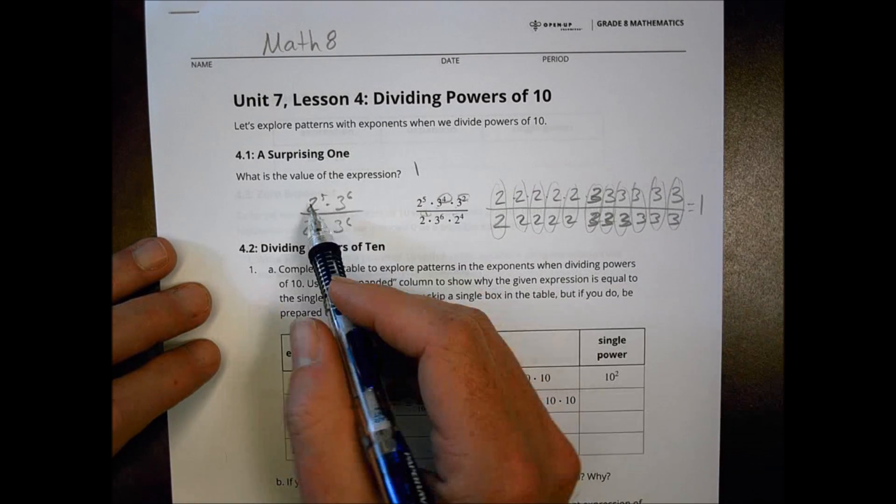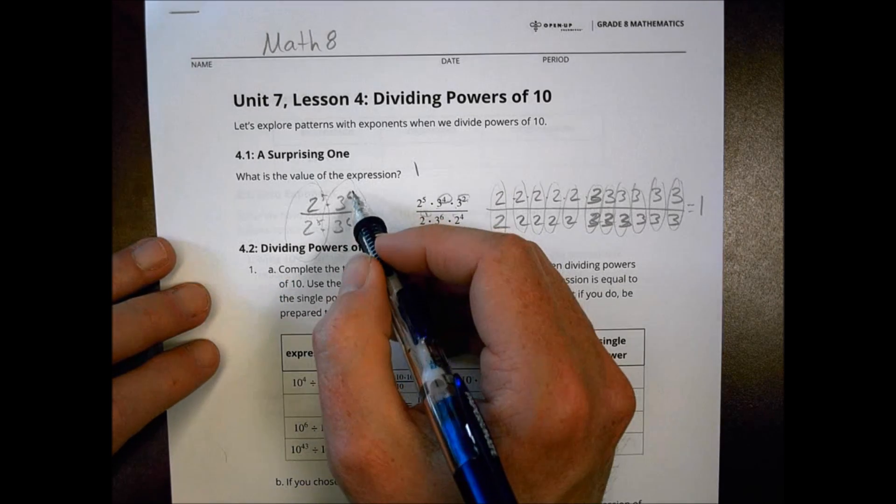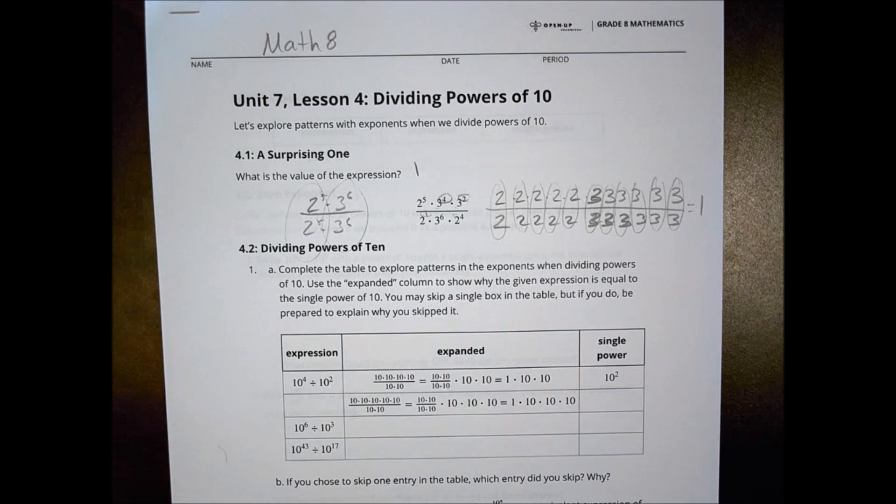We can show it long ways like so. We can combine things and show that this becomes two to the fifth, two to the fifth here, and then three to the sixth, and three to the sixth there. You end up with one no matter what you do.